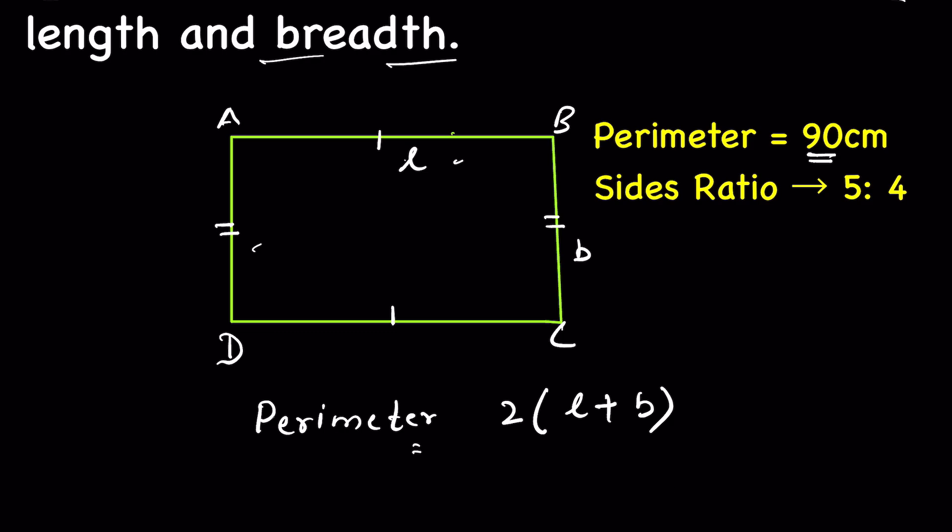We simply write it 2 parenthesis l plus b. Given 2l plus b is 90 centimeter, so this is our primary equation.